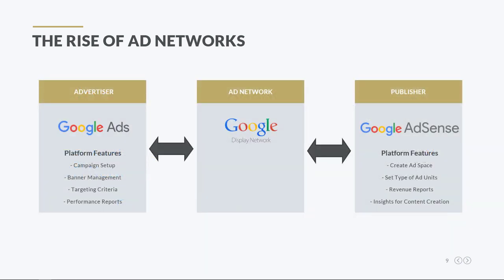Ad networks typically offer two different platforms to their clients — one designed for advertisers and another designed for publishers. For example, when it comes to Google's network, advertisers use the Google Ads platform to build and manage advertising campaigns, while publishers use the Google Adsense platform to create ad spaces on their websites and sell them.